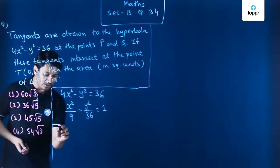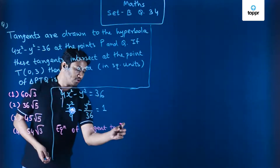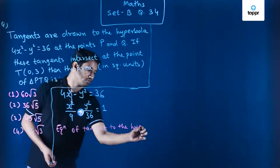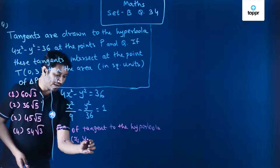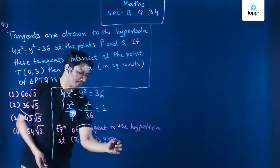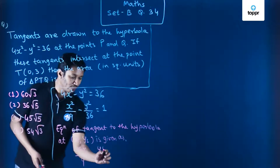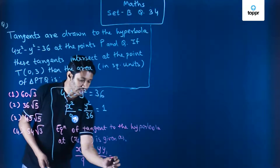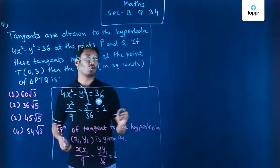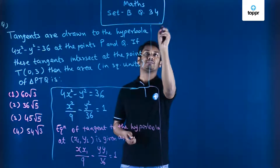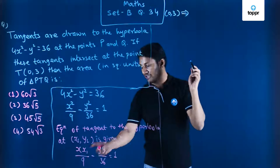We know that the equation of tangent to the hyperbola at point (x₁, y₁) is given as xx₁/a² minus yy₁/b² equal to 1, where a² is 9 and b² is 36. Since this tangent passes through point T, we substitute the coordinates of T, which are (0, 3), into this equation.